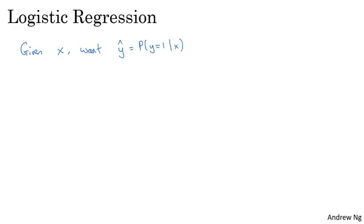So in other words, if x is a picture, as we saw in the last video, you want y hat to tell you what is the chance that this is a cat picture. So x, as we said in the previous video, is an nx dimensional vector.